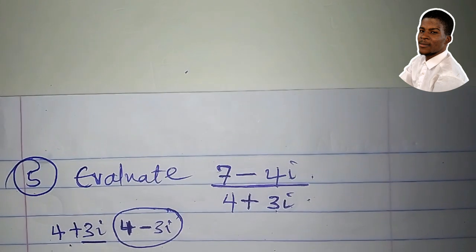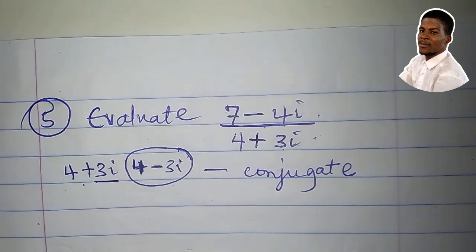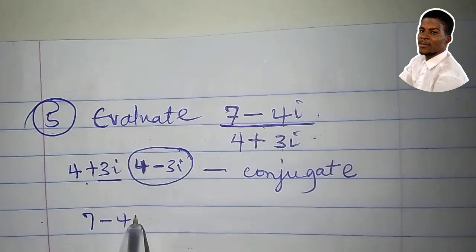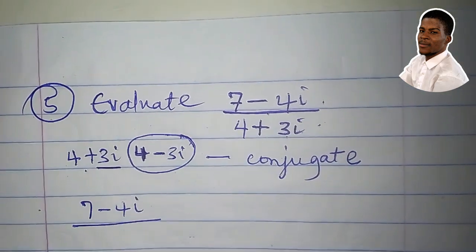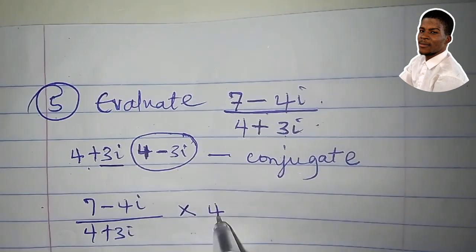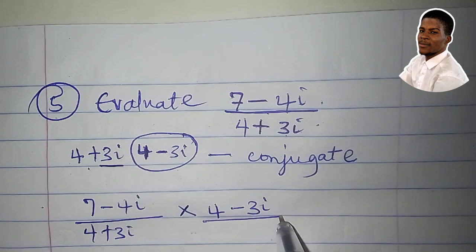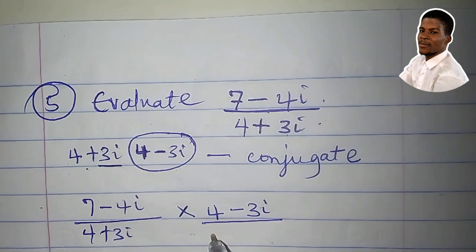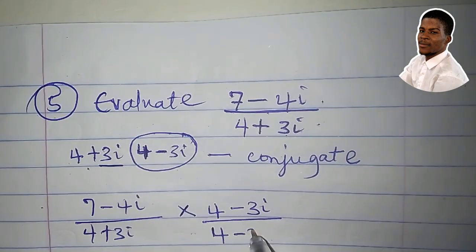So to evaluate this, 7 minus 4i all over 4 plus 3i, I'll multiply by 4 minus 3i and multiply the denominator also by 4 minus 3i.